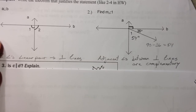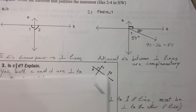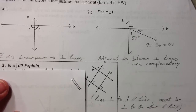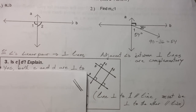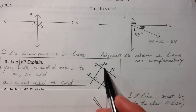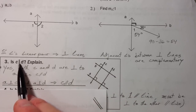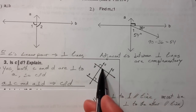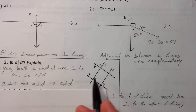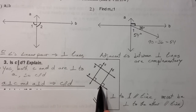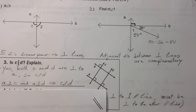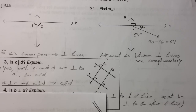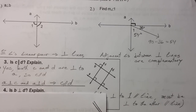Subtract from 90 and you get 54. Is c parallel to d? We don't know by line b, but we do know by line a, because line a is perpendicular to both of those — that's the perpendicular transversal theorem. Because a is perpendicular to c and a is perpendicular to d, they both must be parallel. Is b perpendicular to d? We know b is perpendicular to c, and we know c is parallel to d because we just proved that, so it's got to have the same relationship — that's the perpendicular transversal theorem.